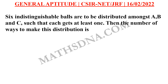Let us go to the question. The question is: 6 indistinguishable balls are to be distributed among A, B and C such that each gets at least one. Then the number of ways to make this distribution is — the options are A) 6, B) 10, C) 18, and D) 15.